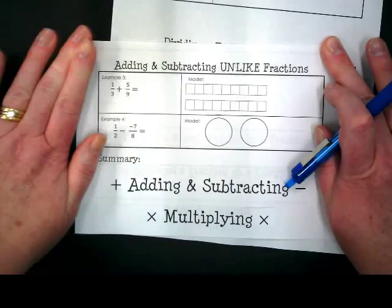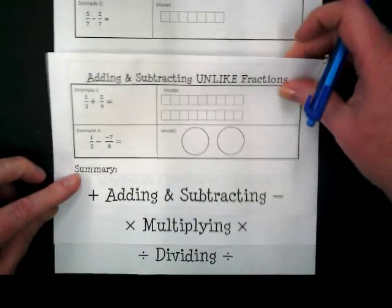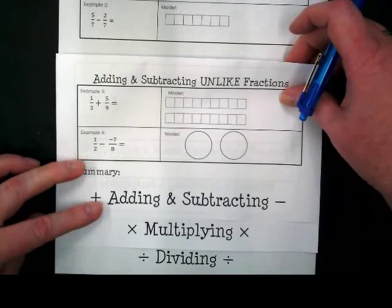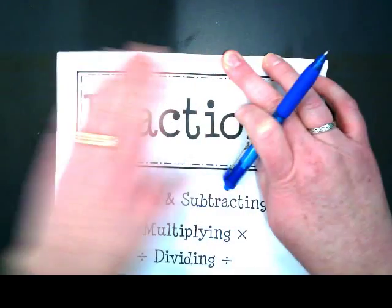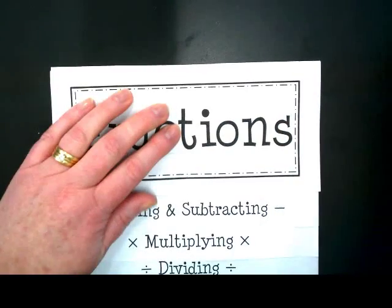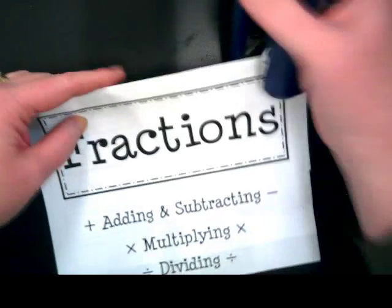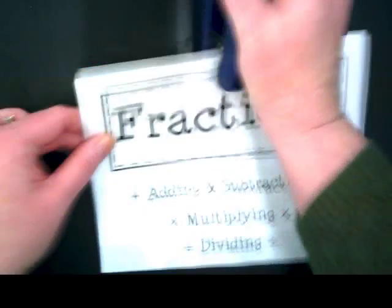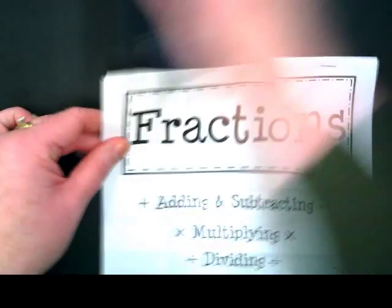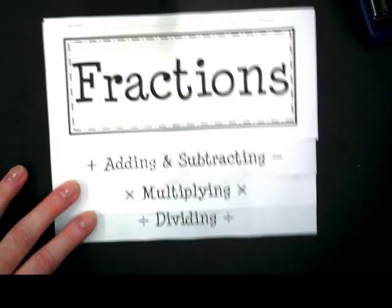You put a crease in it. And then if you take this paper and put it right above where it says dividing and then fold this down, you're going to have a flip book. You take your stapler and just staple it like this. And you now have a flip book.